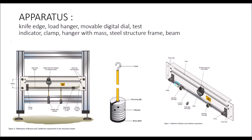We have a scale on the frame and we have knife edge load hangers for the application of load. We apply the hanger on the knife edge so that the load can be applied at any section or point. This is the movable dial gauge test indicator — when we apply the load we can measure the deflection using this dial gauge. The apparatus is fixed to the bigger frame using thumb screws.